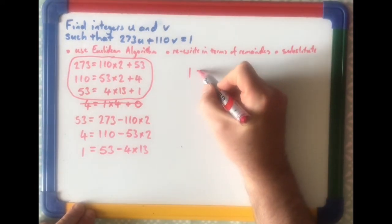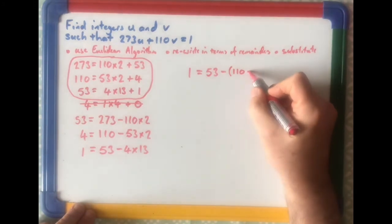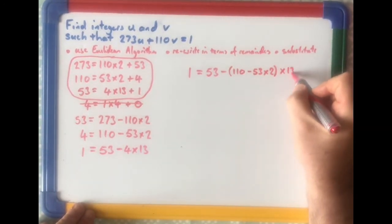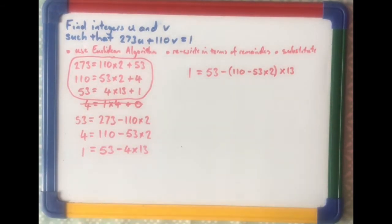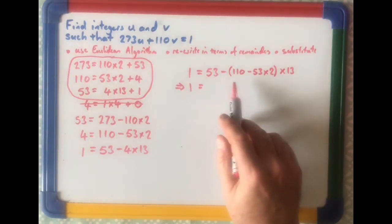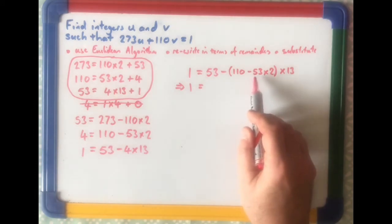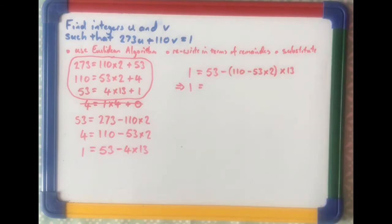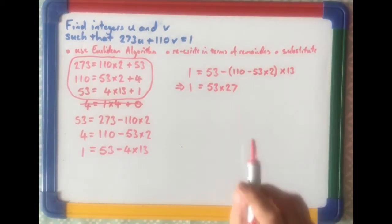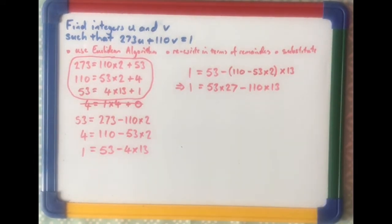So let's start that. Look at the first one here. 1 equals 53 minus, remember, we're replacing the 4 for that, so 110 minus 53 times 2, that's our 4 times 13. That was replaced by this bit here. Let's tidy that up a bit. We've got 1 equals, we've got 53, that's 26, so it's going to be 53 times 27, minus 110 times 13. So that's just that tidied up a bit.